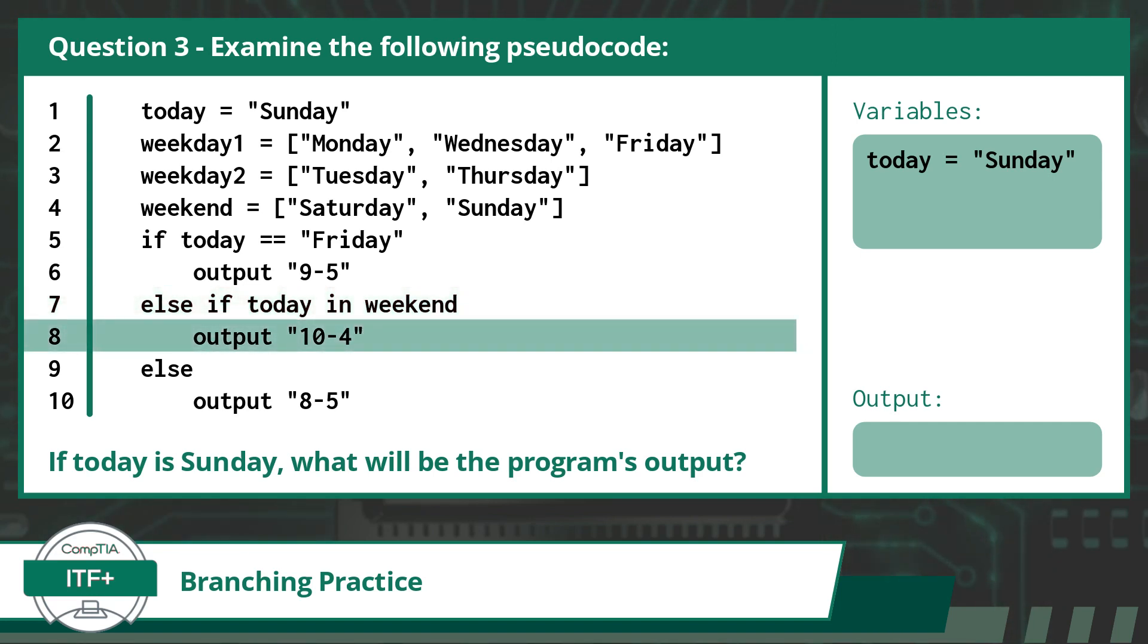Now we will execute this branch, which includes the indented statement on line 8. Line 8 calls for the program to output the hours of 10 to 4, and that is our answer. If you found these example questions helpful, please share your thoughts in the comments. Also, I look forward to seeing you in the next video where we will begin our study of loops.